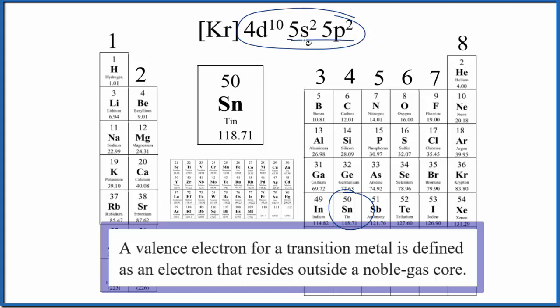But in practice, these are the ones that are going to be involved in chemical bonds. The 4d10, since it's full, fairly stable, we're usually going to see these forming the chemical bonds. So therefore, probably best to say tin has four valence electrons.